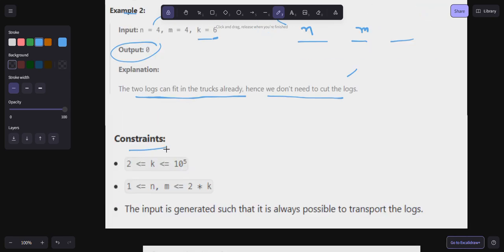The constant size k value is from 2 to 10^5 and n and m values are from 1 to 2k. The input is generated such that it is always possible to transport the logs.